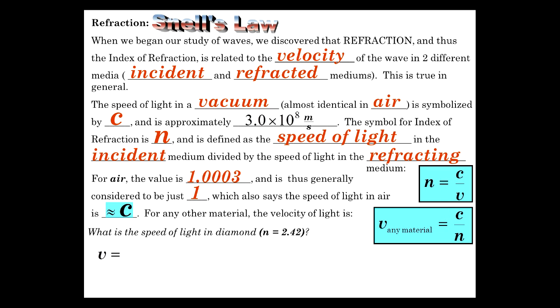For instance, if we want to know the speed of light in diamond, diamond has a high index of refraction, 2.42. So you just do the ratio. Speed of light divided by that gives you C over 2.42, about 41% the speed of light in a vacuum, basically 124 million meters per second.